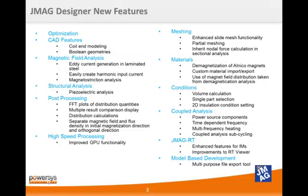JMeg Designer version 12 has many new features. First and foremost, we have added a simple optimization program which works for both geometry and parameter optimization. On the geometry creation side, we've added an automatic coil end-turn generation feature and a Boolean geometry generator. Magnetic field analysis capabilities have been improved by adding a tool to simulate eddy currents formed in lamination steels. We've also added a feature to easily create harmonic input currents as well as a magnetostriction analysis tool.